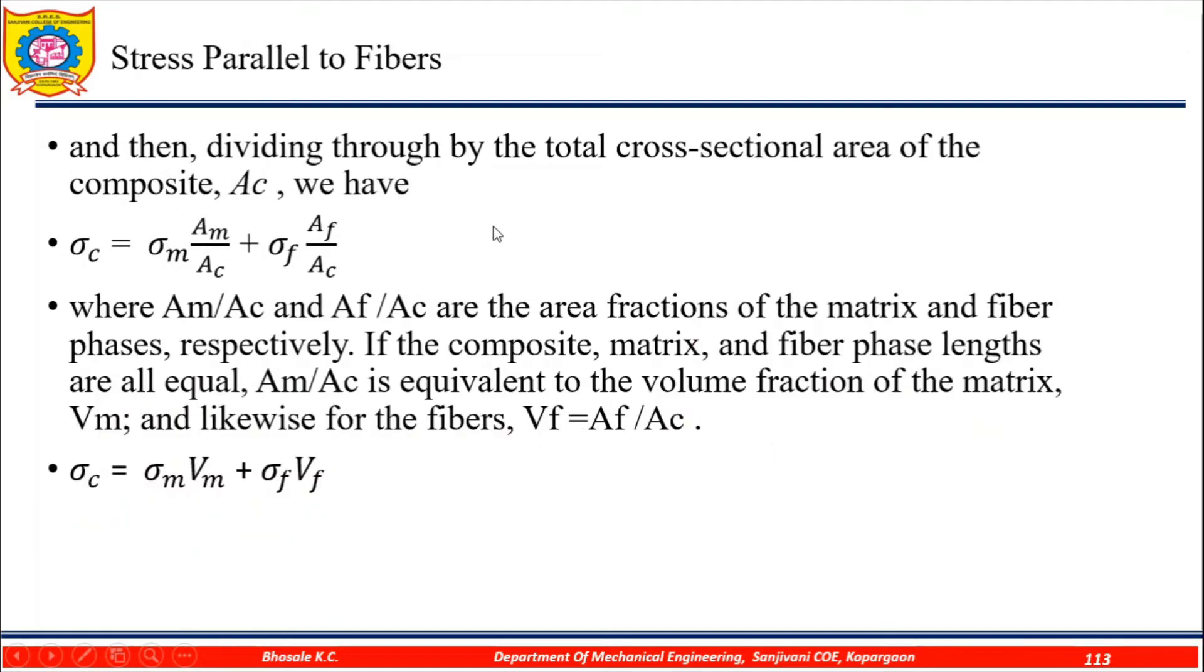Dividing through by the total cross sectional area of the composite A_c we have sigma_c equals sigma_m times A_m/A_c plus sigma_f times A_f/A_c. Where A_m/A_c and A_f/A_c are the area fractions of the matrix and fiber phases respectively. If the composite, matrix, and fiber phase lengths are all equal, A_m/A_c is equivalent to the volume fraction of the matrix, V_m, and likewise for the fibers, V_f equals A_f/A_c. So, we put the value: sigma_c equals sigma_m times V_m plus sigma_f times V_f.